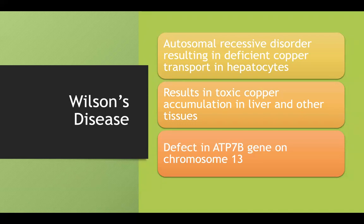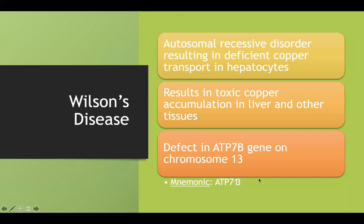This is caused by a defect in the ATP7B gene on chromosome 13. I remember that this ATP7B gene affects chromosome 13 because if you look at my mnemonic here, you can see that it looks like ATP7B, but it's actually 13 — if you combine the one and the three, it can show you your ATP7B gene.